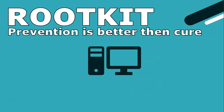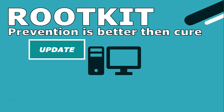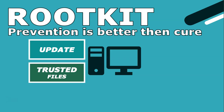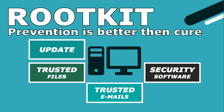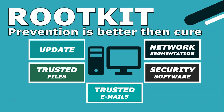That is why prevention is always better than cure. Keep operating systems, applications, and security software up to date to prevent vulnerabilities that rootkits can exploit. Exercise caution when downloading files or clicking on suspicious attachments — download files from trusted sources only. Avoid opening email attachments or clicking links from unknown sources. Use comprehensive security software that includes rootkit detection, and use strong unique passwords. You can also implement network segmentation, which divides your network into smaller subnets, helping limit the spread of future infections so it doesn't affect the entire network.